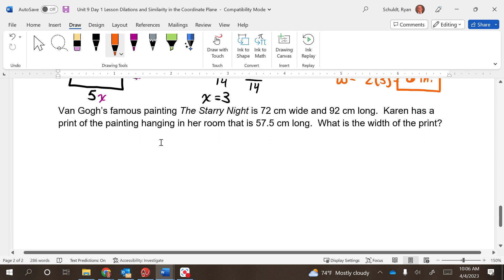Van Gogh's famous painting The Starry Night is 72 centimeters wide and 92 centimeters long. Karen has a print of the painting hanging in her room that is 57.5 centimeters long. What is the width of the print? So let's do the original first: 72 wide over 92 long.